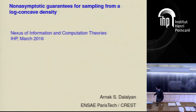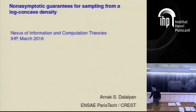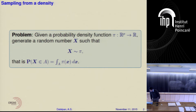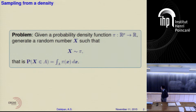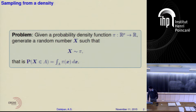I will talk about the problem of sampling from a density in a multi-dimensional situation. The main goal is the following: we are given a probability density function pi of dimension P, and we would like to generate a random number capital X drawn from pi, which means that the probability of X belonging to any set A can be computed as the integral of pi over the set A.